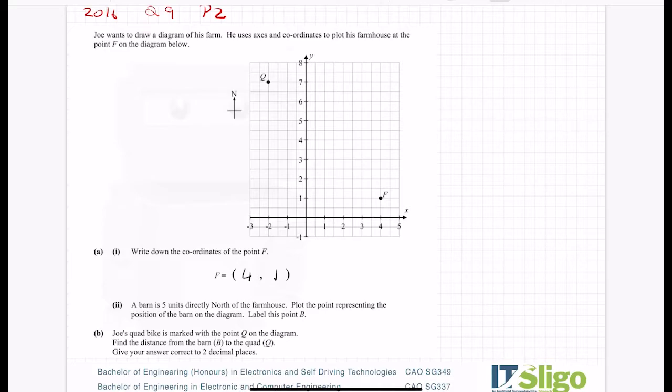A barn is 5 units directly north of the farmhouse and you can see they've given us a little compass here to show us north. So the barn is 5 units directly north. Plot the point representing the position of the barn on the diagram label the point B. So 5 units up. So I'm looking at the Y axis and I can see every two boxes represents a number. So 5 units up. So 1, 2, 3, 4, 5. So you can see what I've done. I've literally just gone like 5 frog jumps up to find me that position up there at 6.